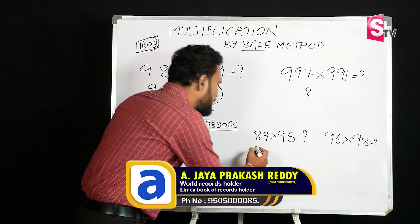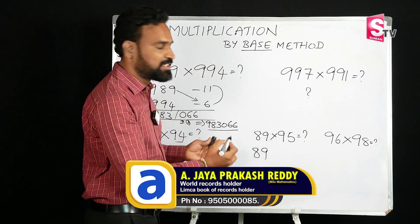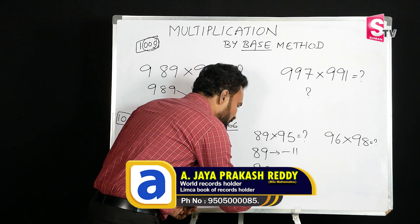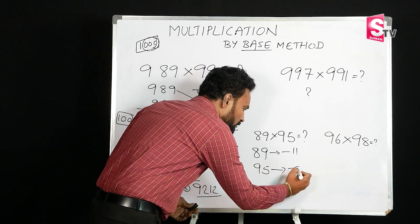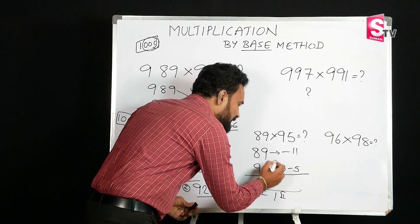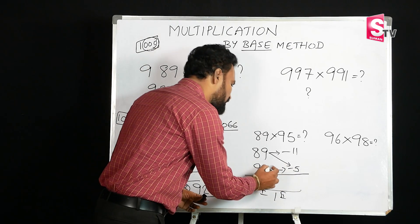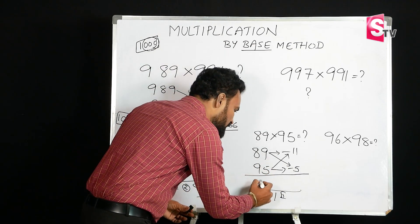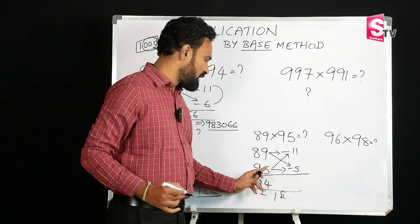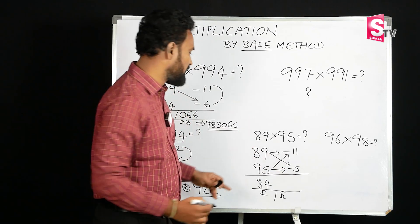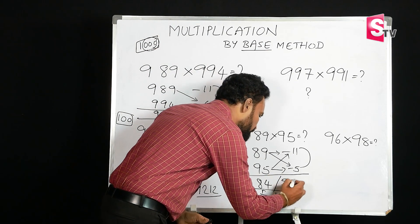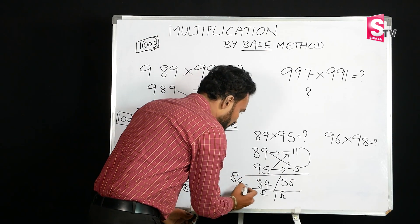Next example: 89 times 95. The base is 100. The deficiency of 89 from 100 is 11, and the deficiency of 95 from 100 is 5. First part: cross subtraction — 89 minus 5 is 84. Second part: 11 times 5 is 55. The final answer is 8455.